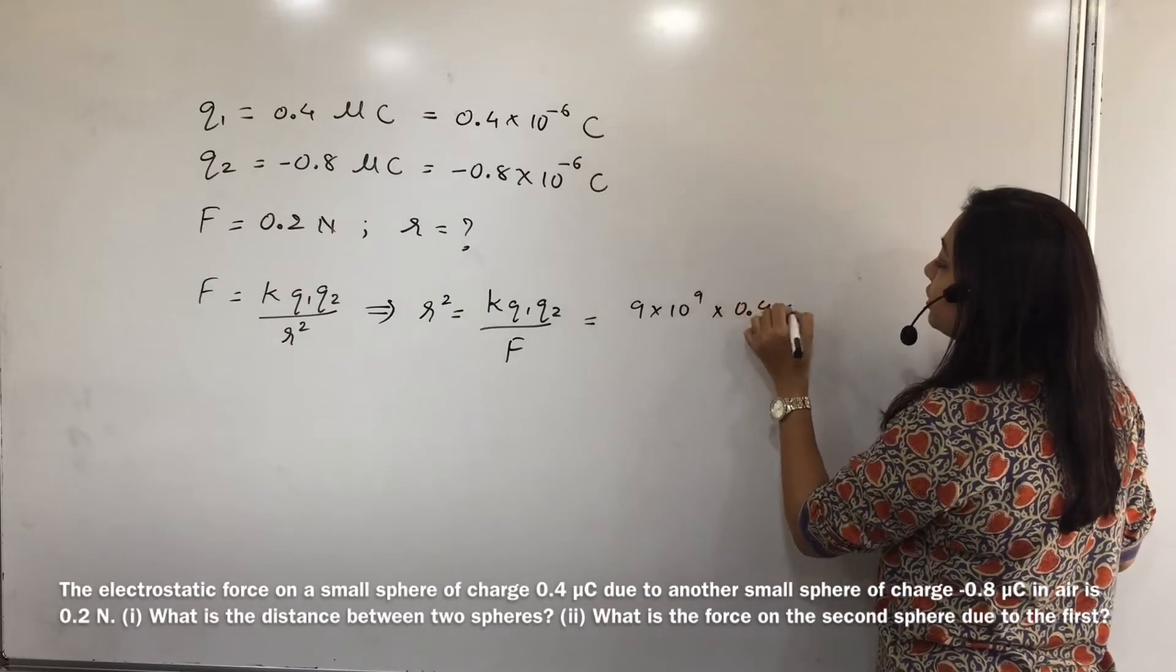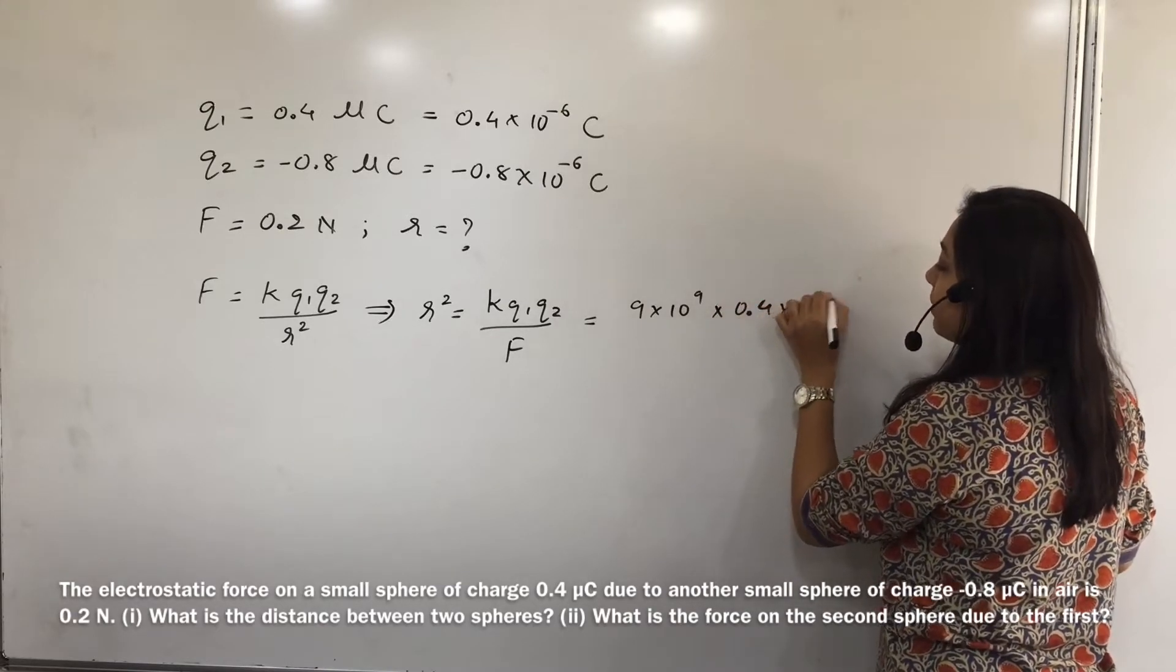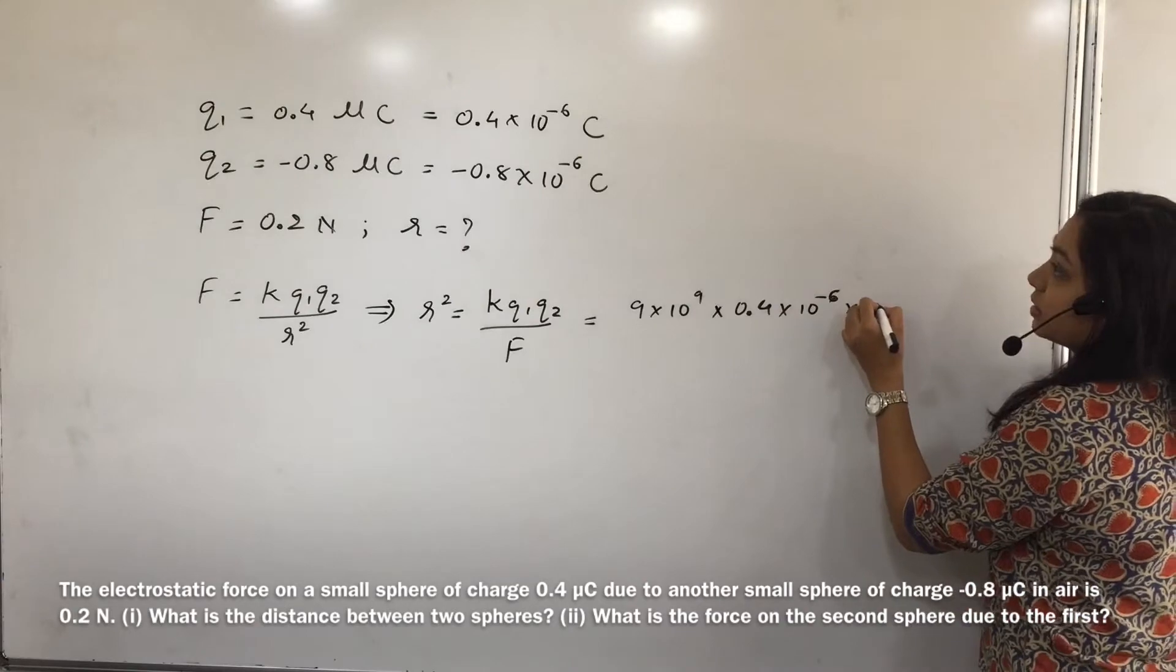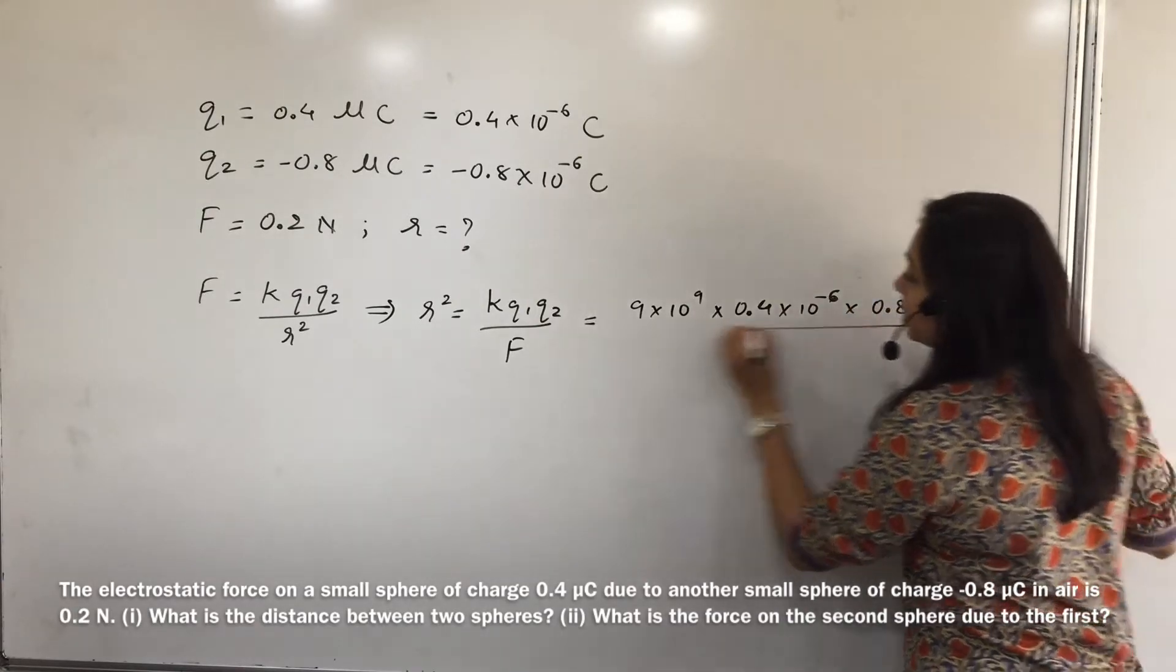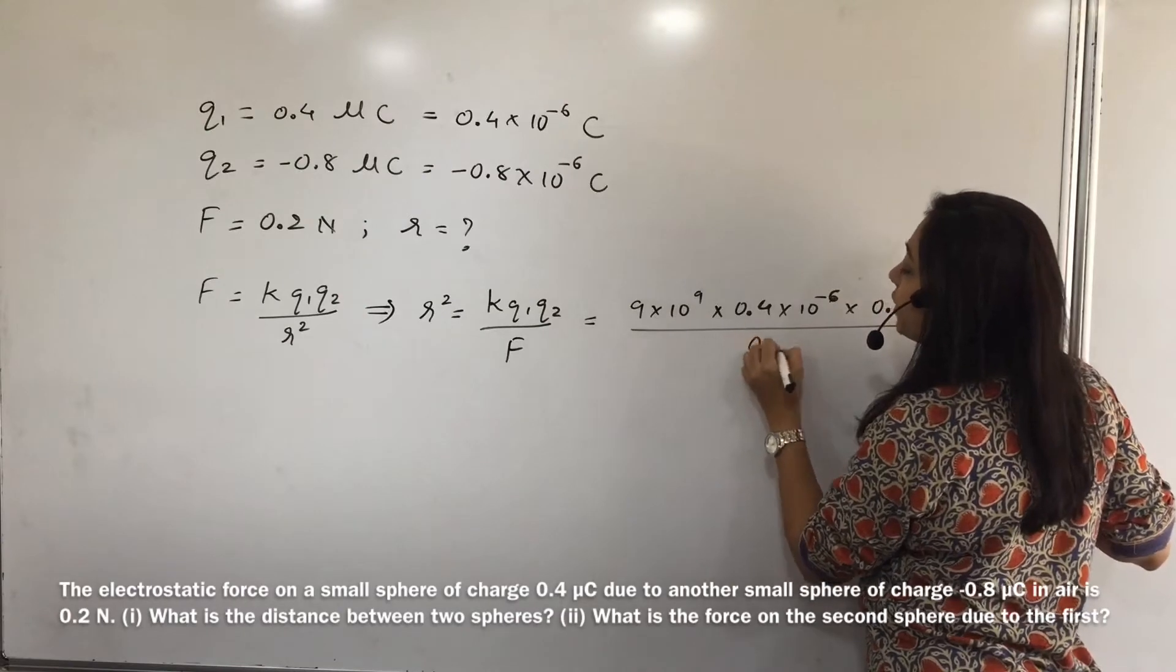So that is 0.4 into 10 to the power minus 6 and 0.8 into 10 to the power minus 6 coulomb upon F. So that is 0.2.